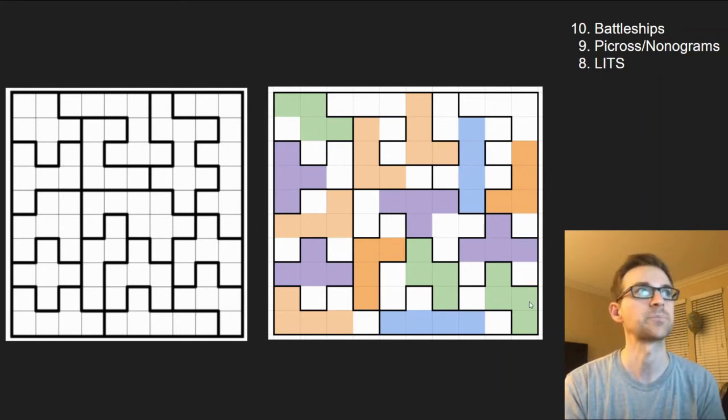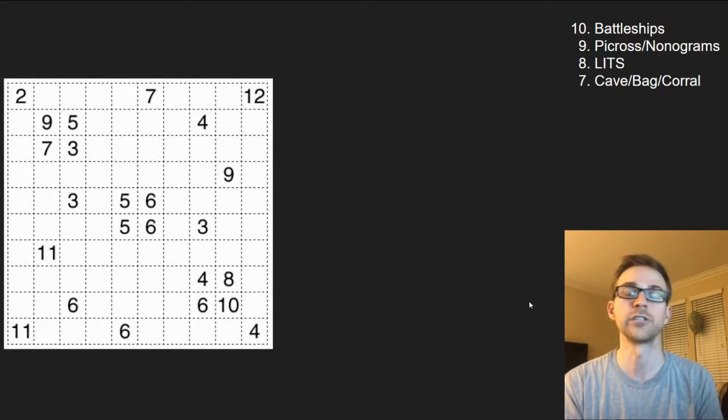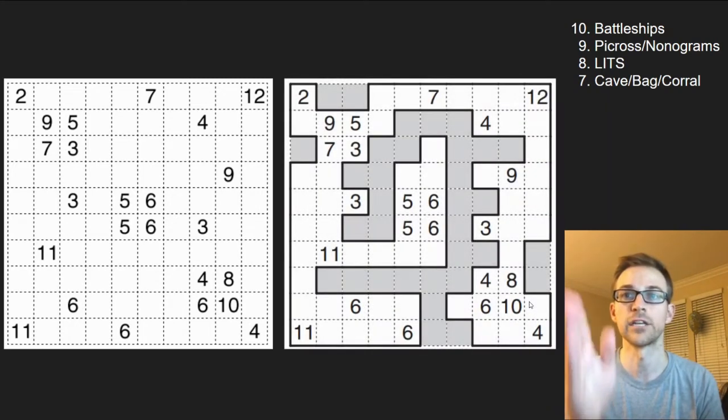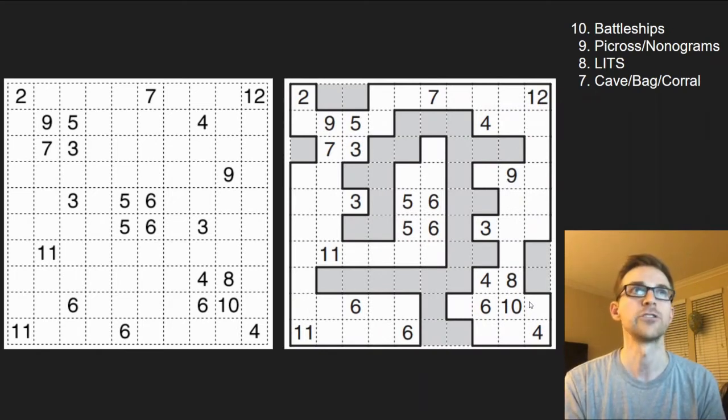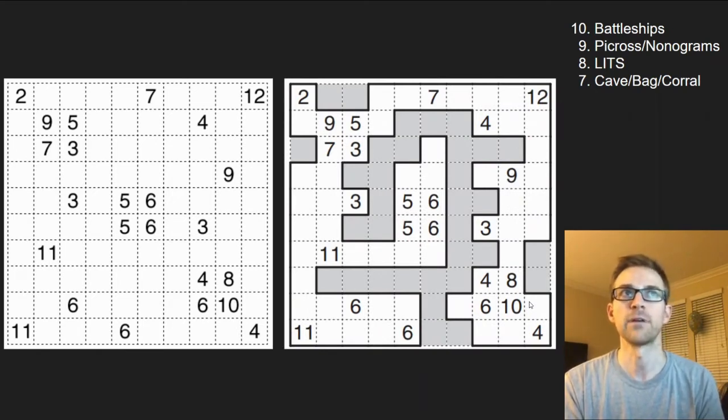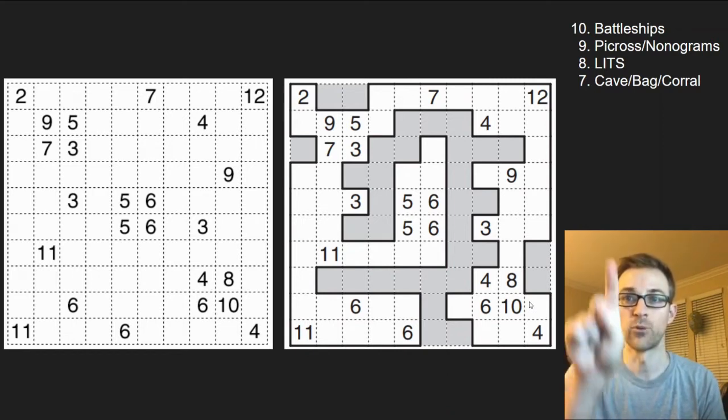Number seven is Cave Bag or also what's known as Corral. What you're doing is you're using the numbers inside the grid to tell you how many unshaded cells are orthogonally jutting out from that number. So you can see if there's a five, you might see four to the left and one up, or three horizontally and two vertically from that number.